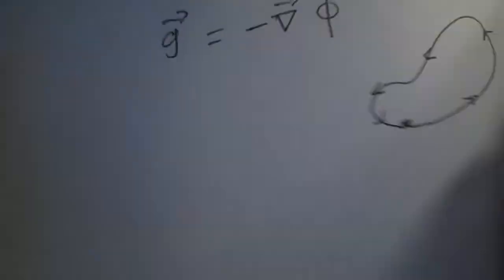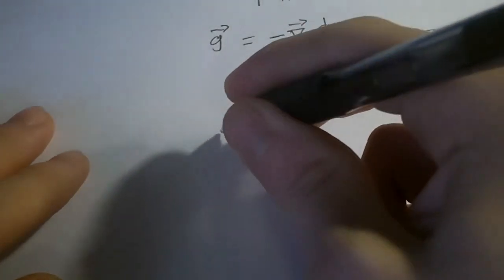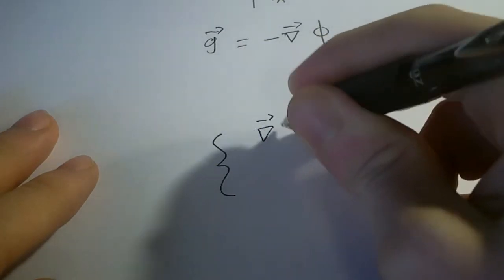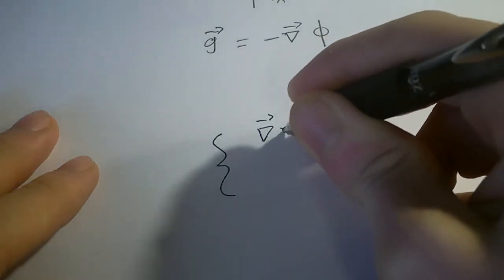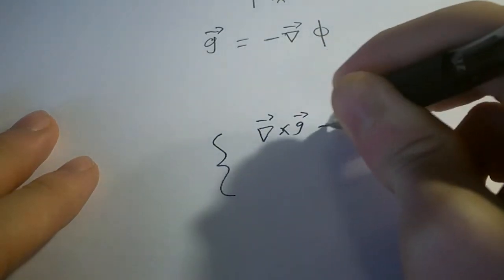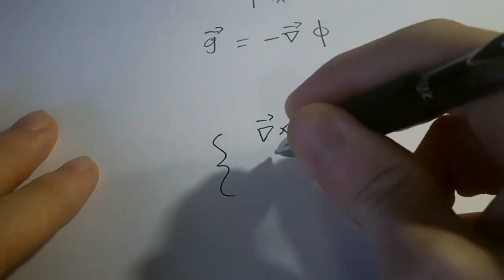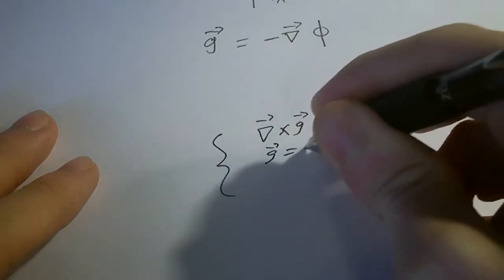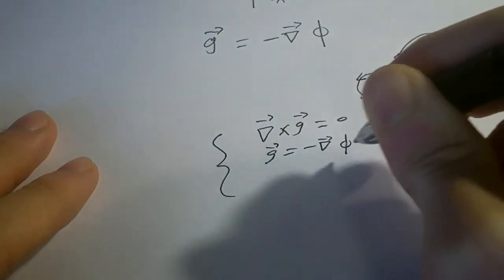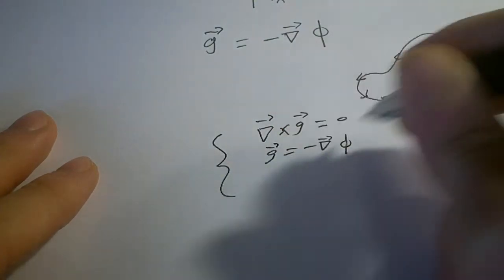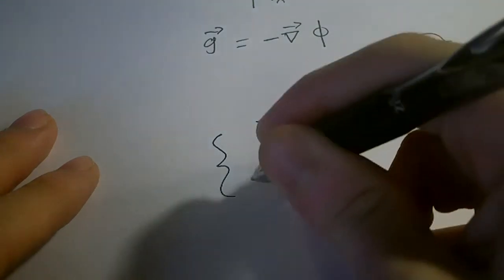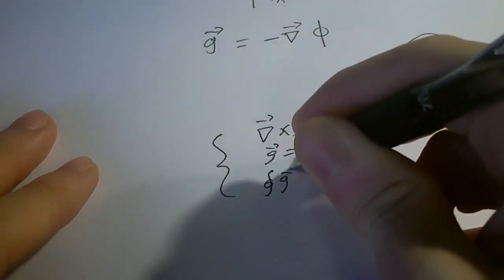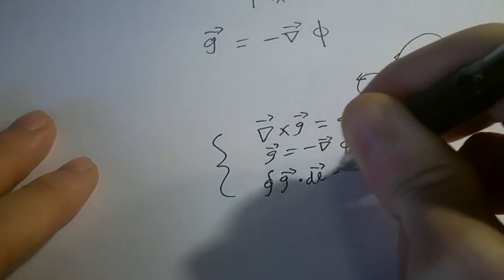So as a nice summary, we can see that for our gravitational fields: del cross g equals zero, g equals minus the gradient of phi, and the contour integral of g·dl equals zero.